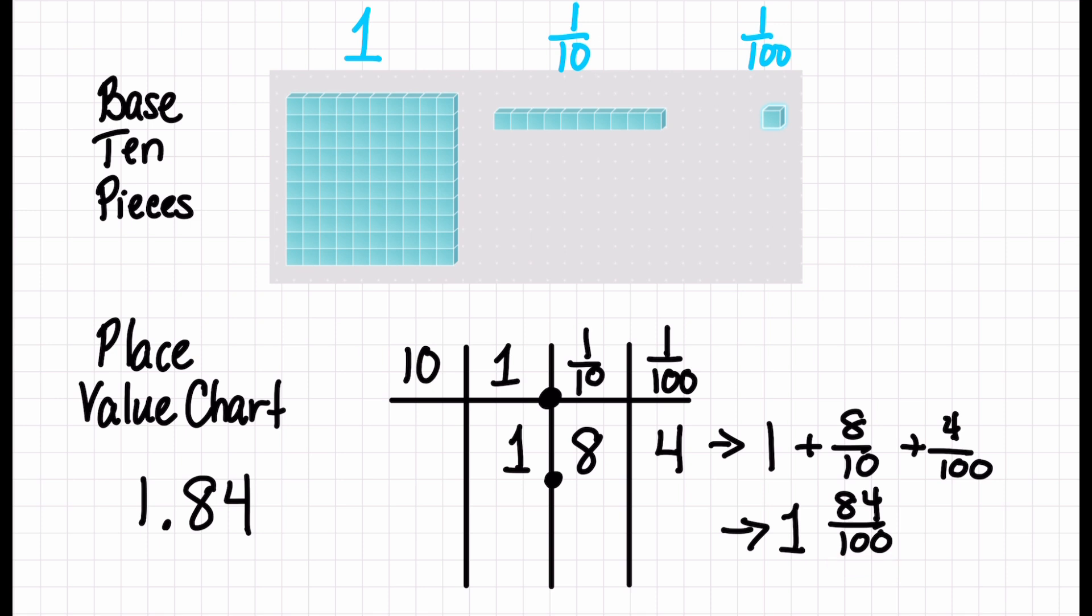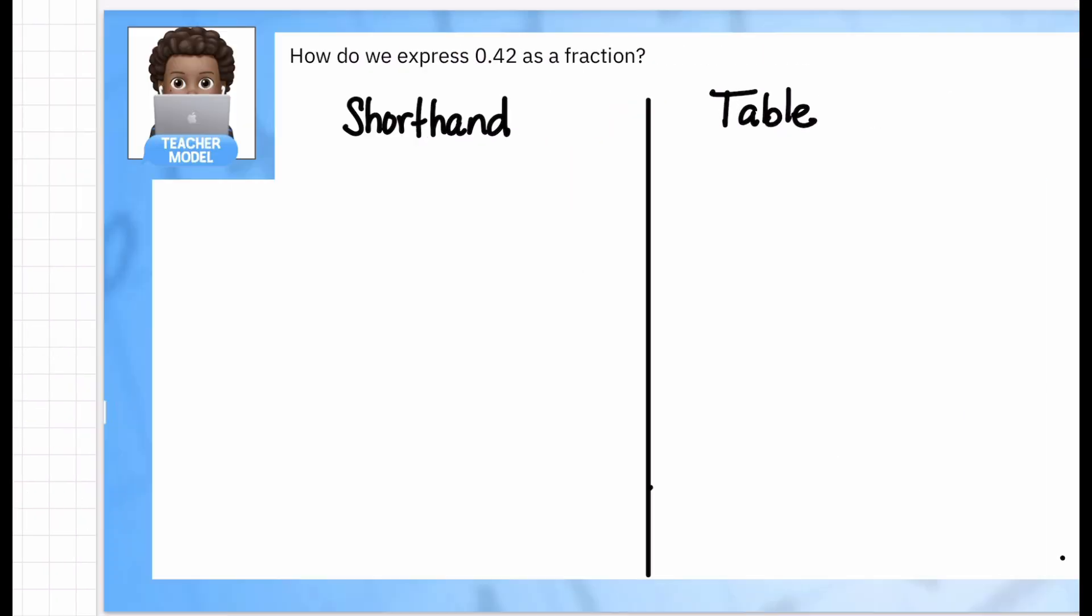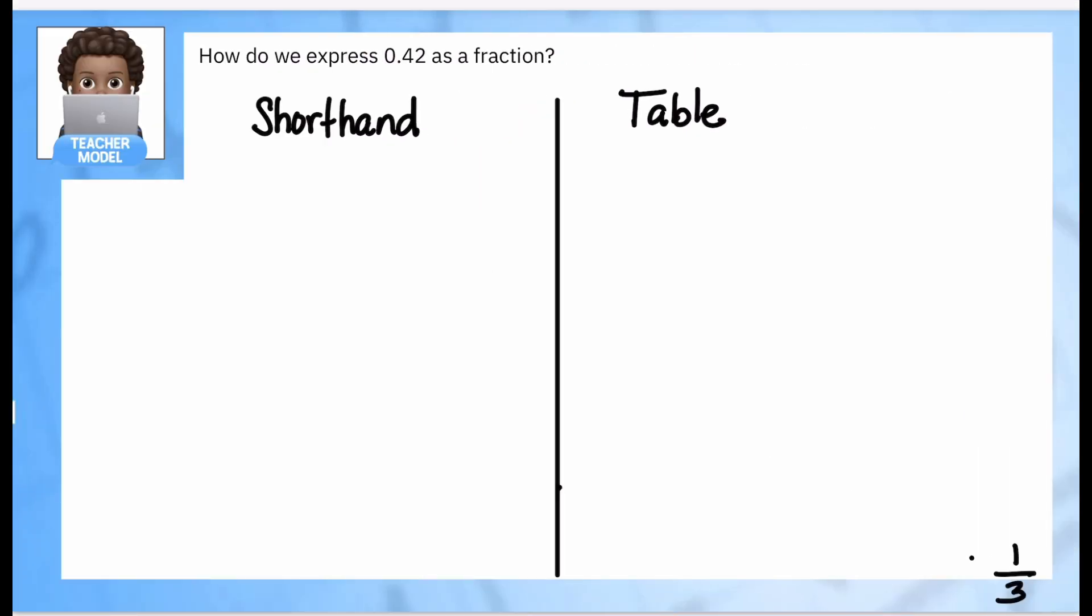All right, let's get some practice using just this number, 0.42, which of course I'm saying wrong. And let's say you were going to make this with base-10 pieces. Now obviously we know that the big flat is equal to one. So if I have 0.42, what would be the simplest way, if I could only use one piece, either skinnies or bits, to make this number? Which would you use?